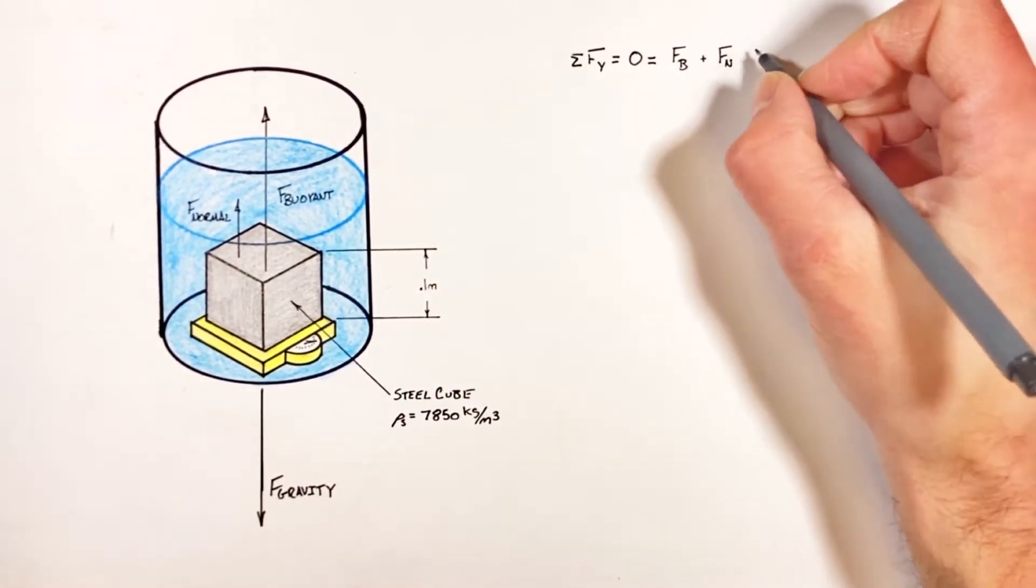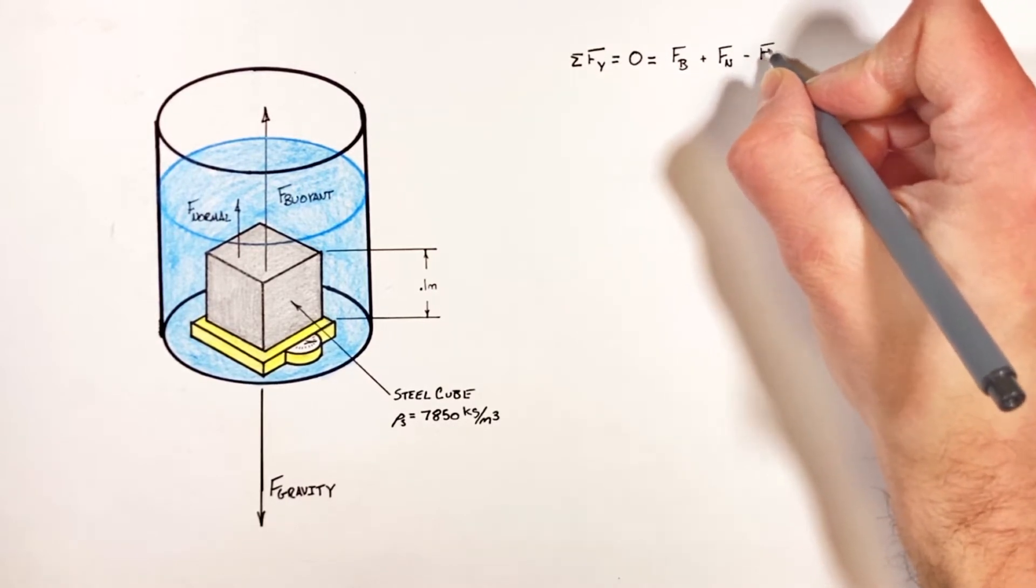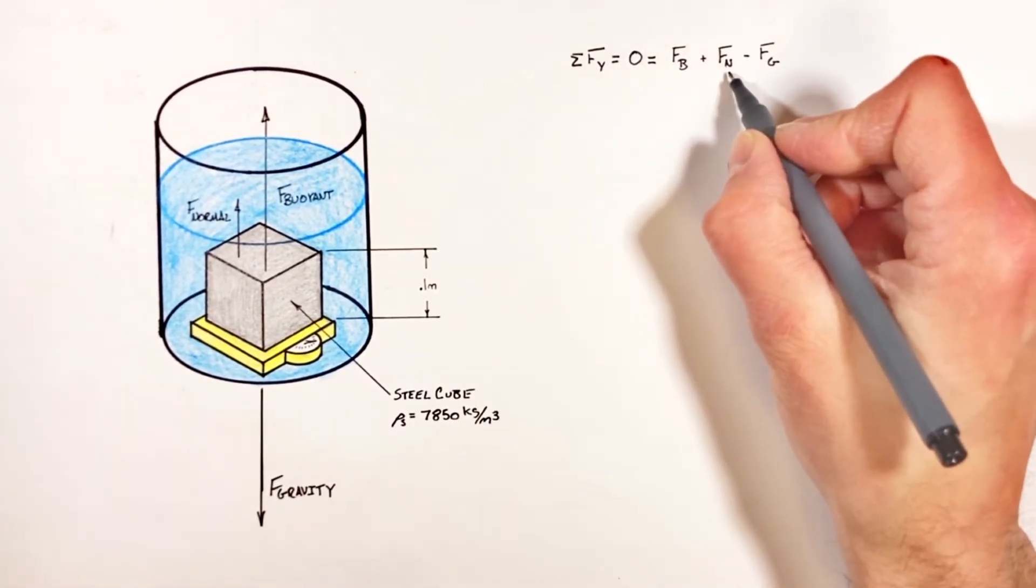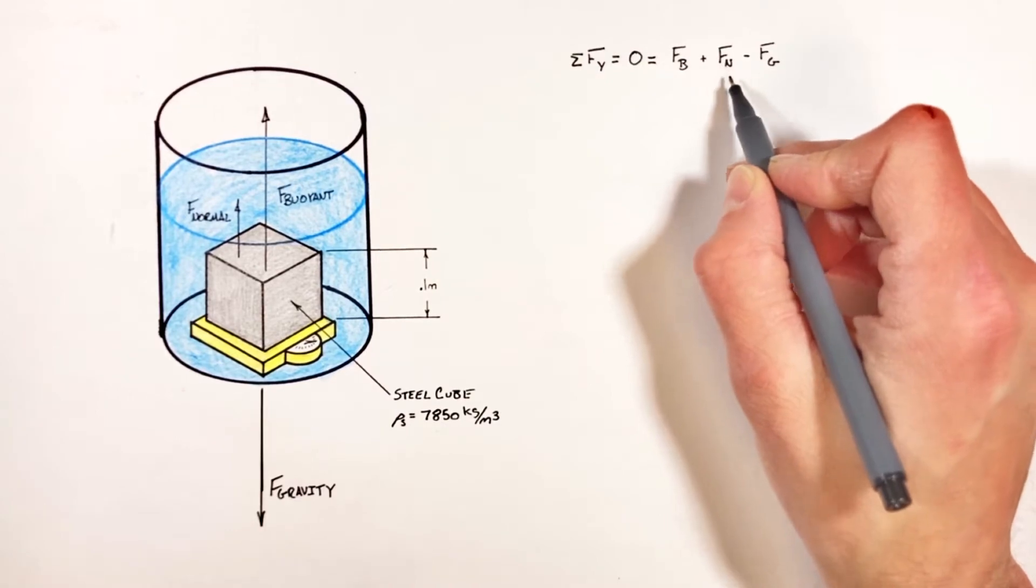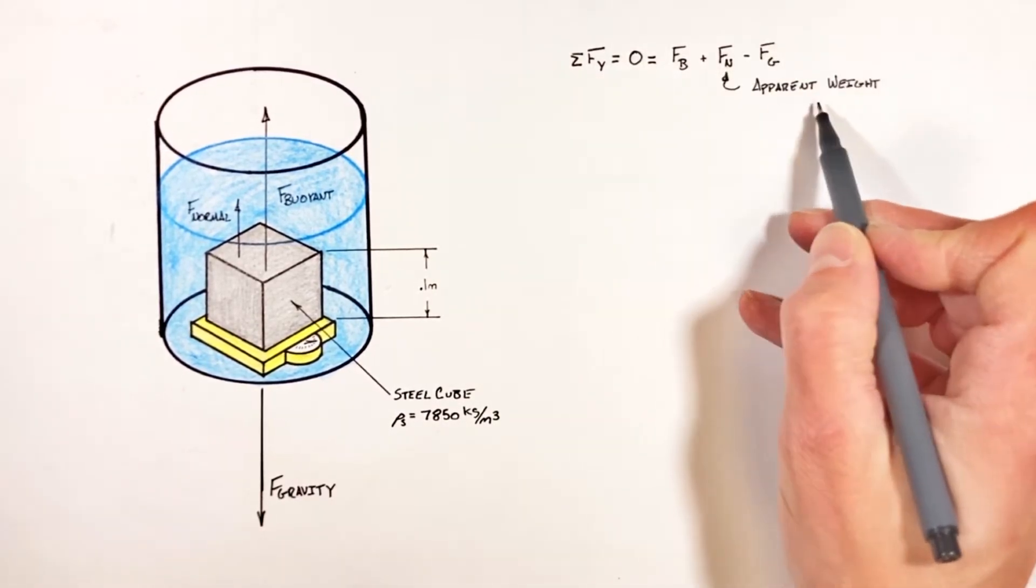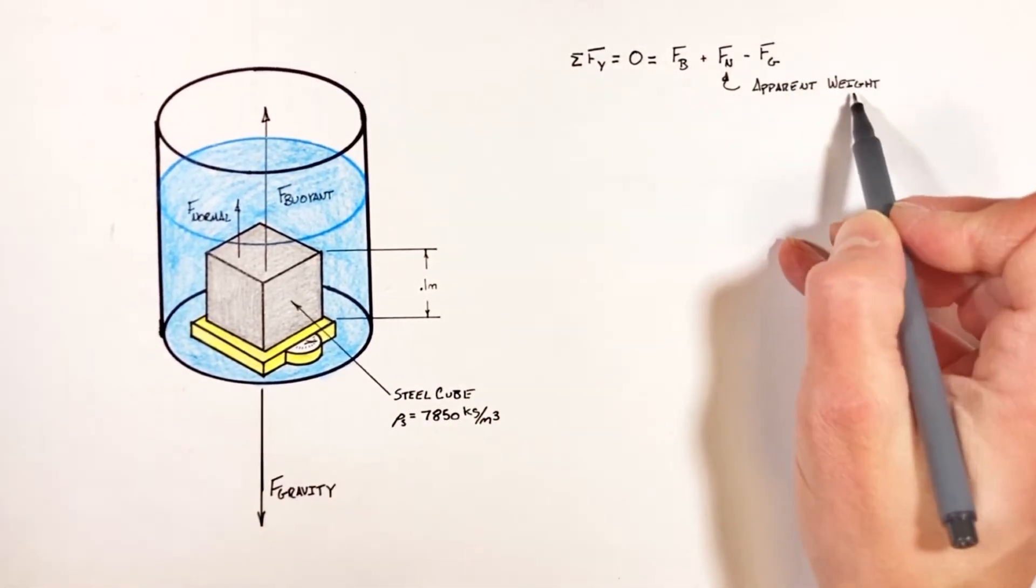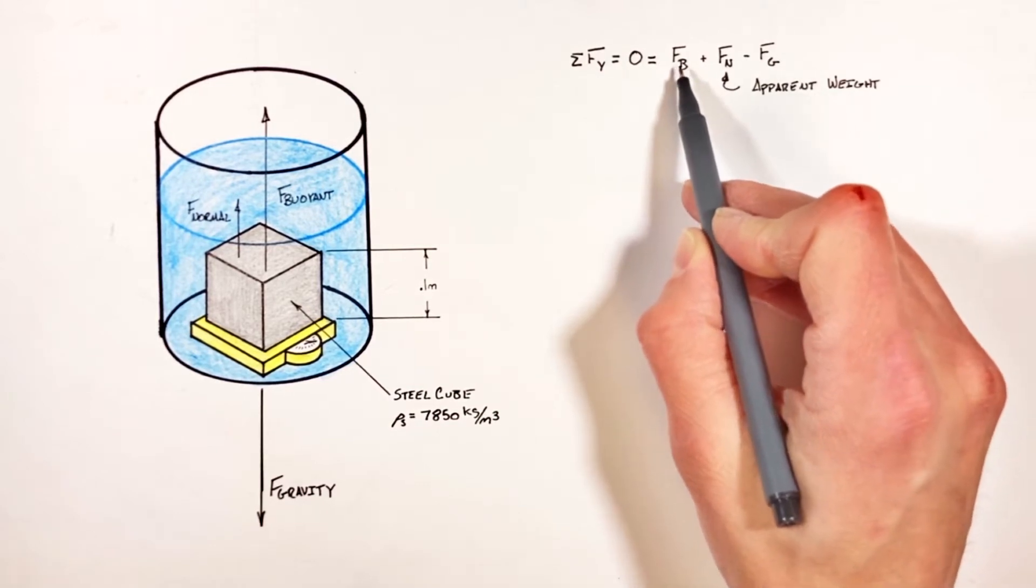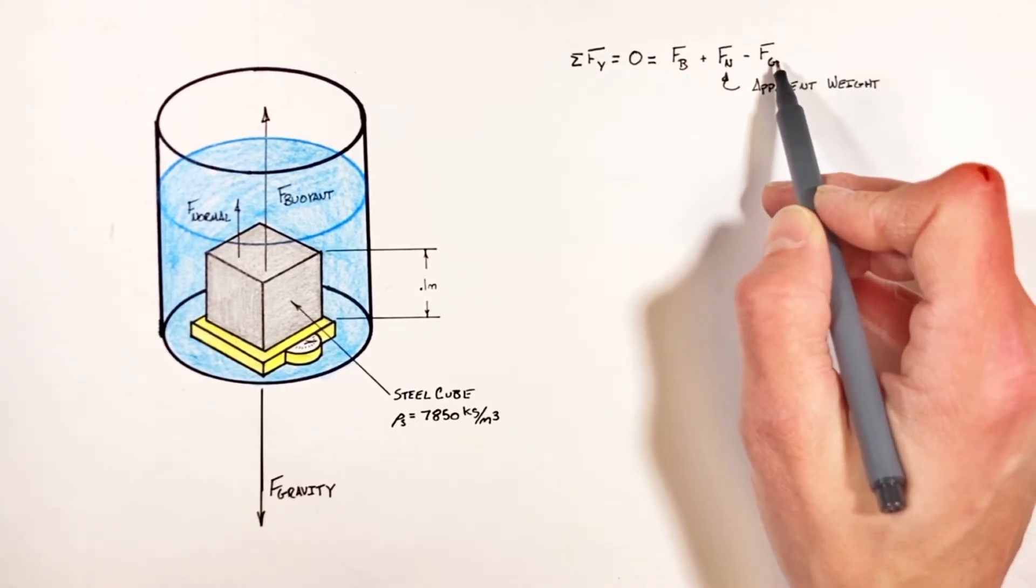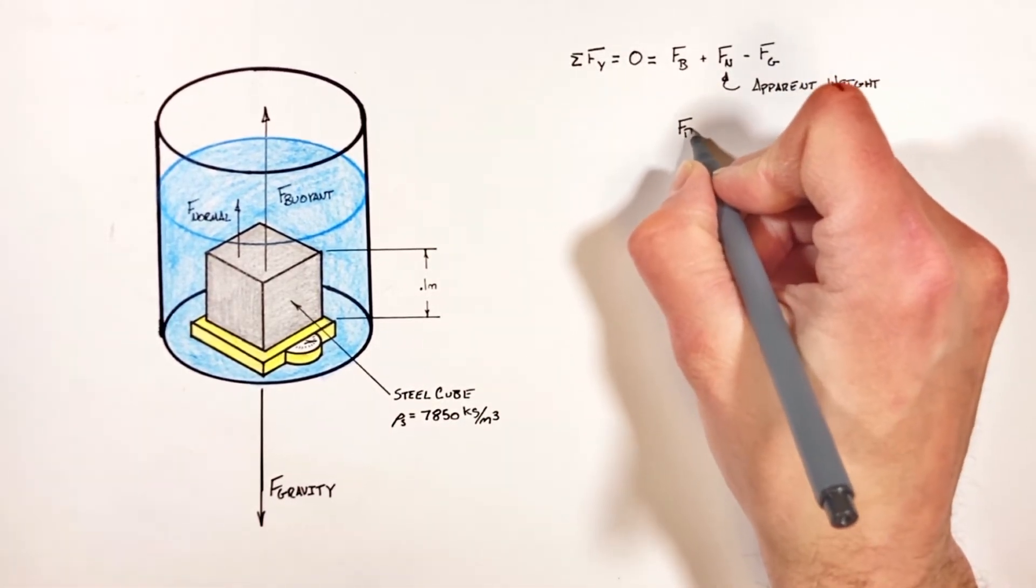And it's this normal force which we refer to as the apparent weight which we're trying to solve for. So in order to solve for the apparent weight, we're going to need to first solve for the buoyant force as well as the force by gravity.